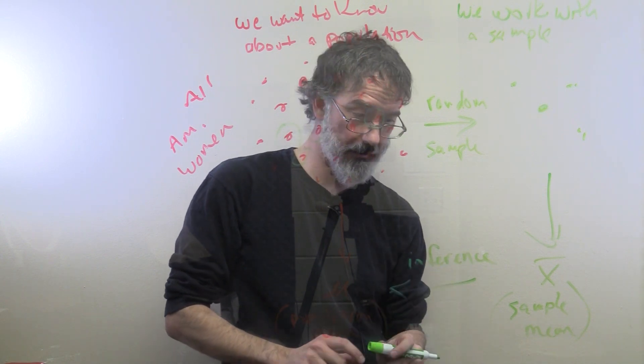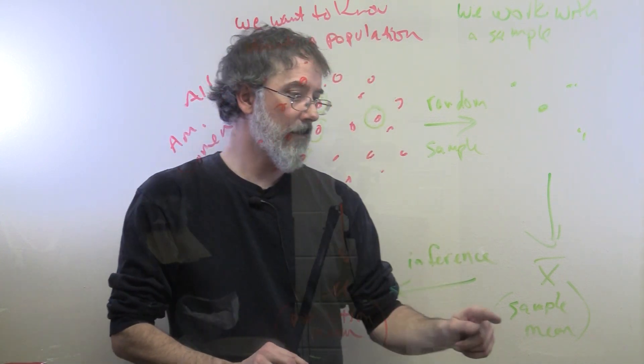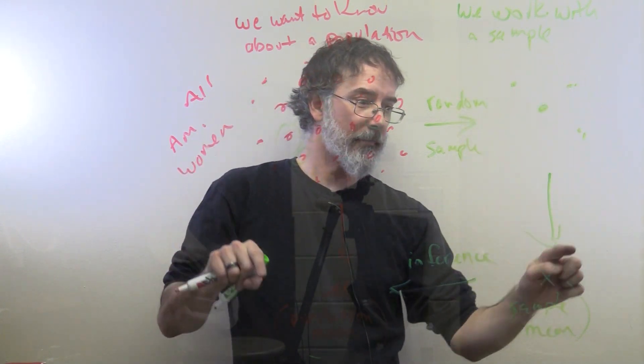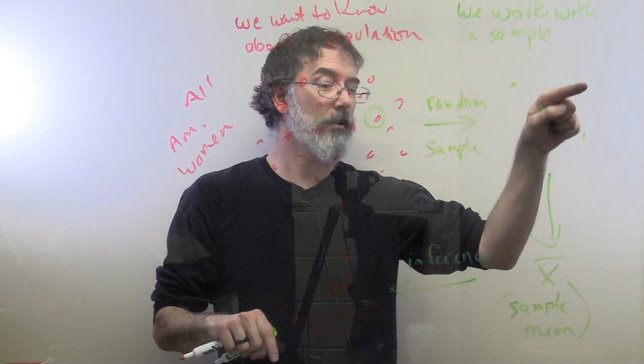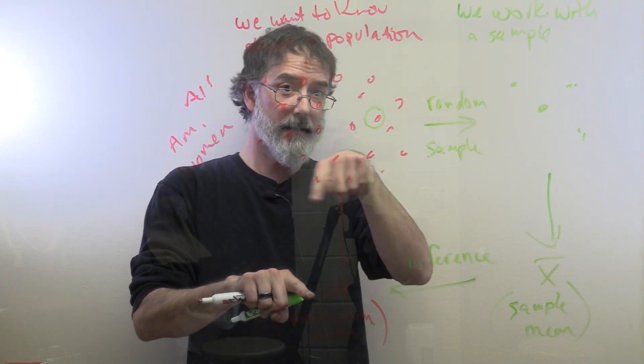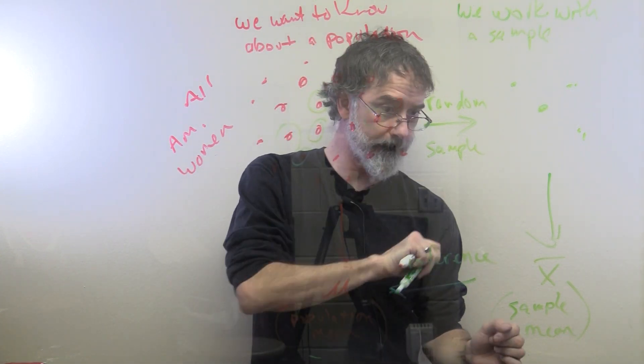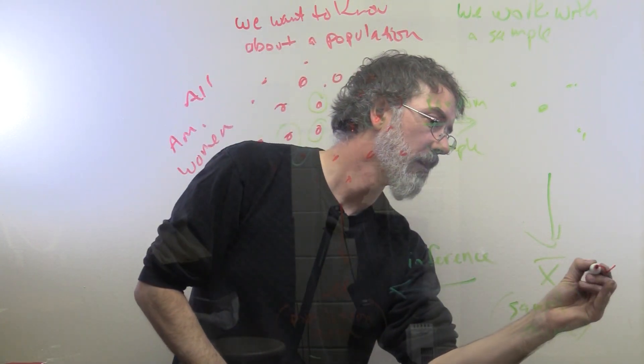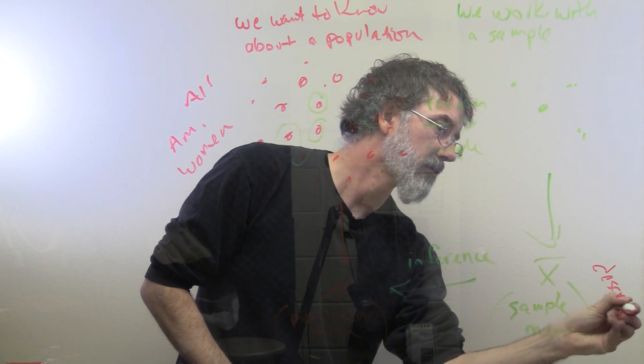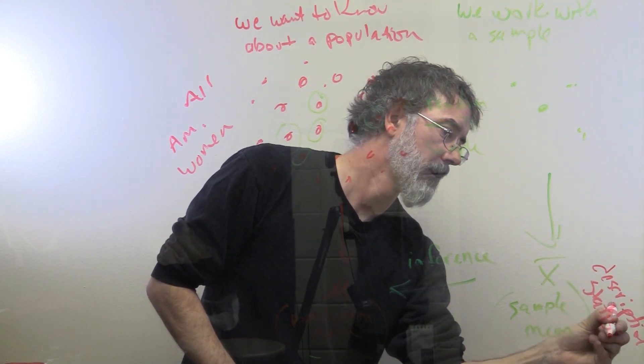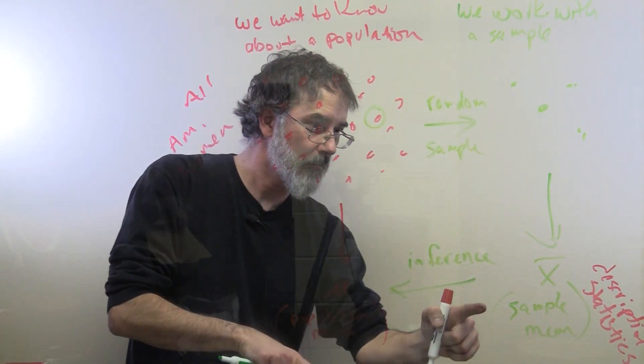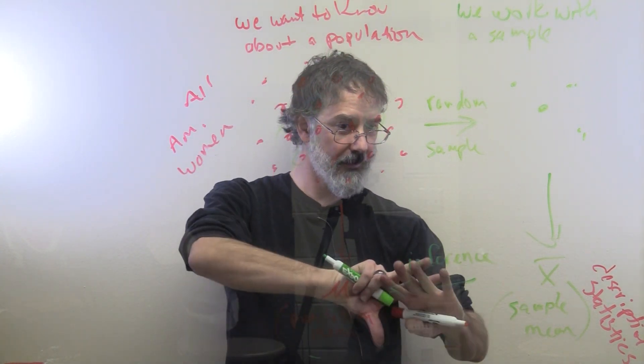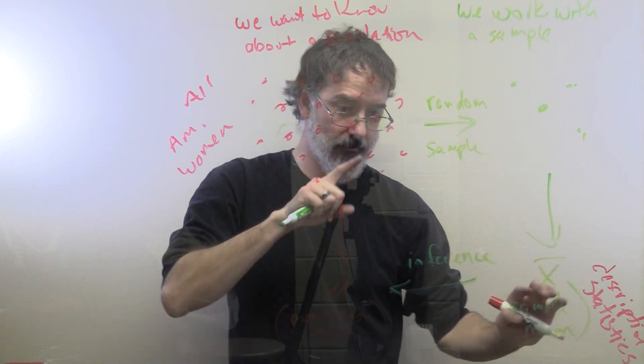So there is a couple more little details here that are of interest. These are descriptive statistics. These are numbers that summarize a data set. So, this sample mean summarizes the sample data, and this population mean summarizes the population data. So, these are descriptive statistics. And when we make this inference, that is a process that we are going through. And this is an inferential statistical process that we are going through there.